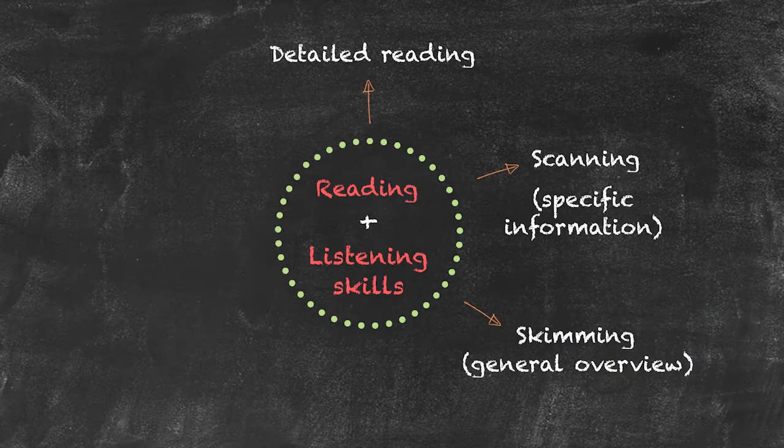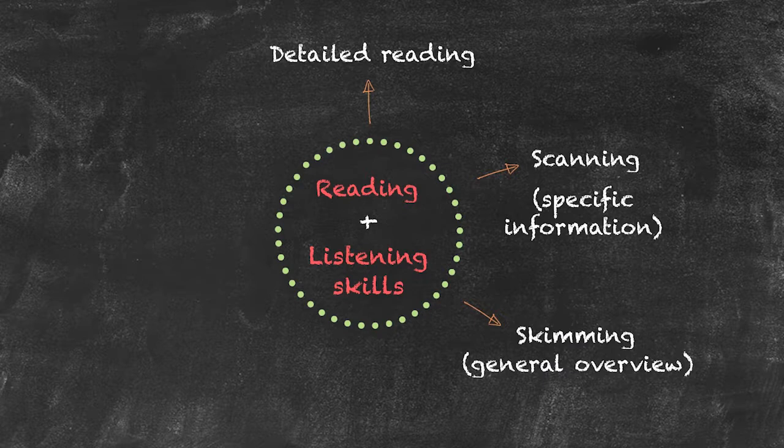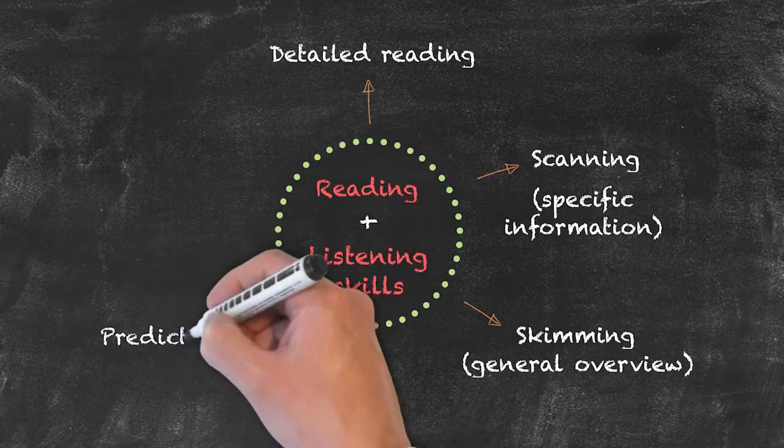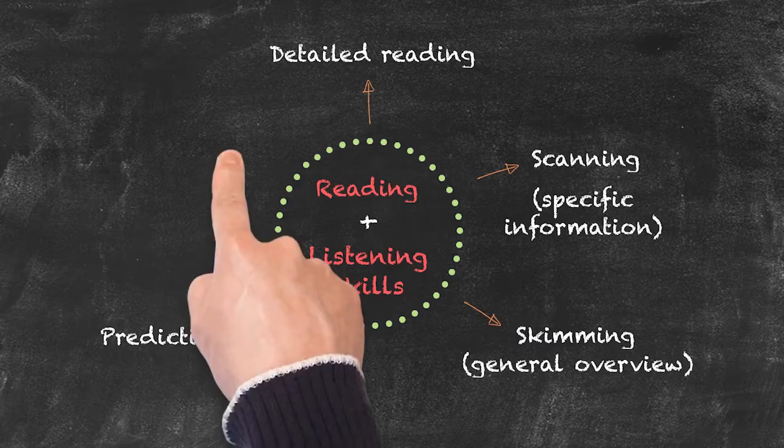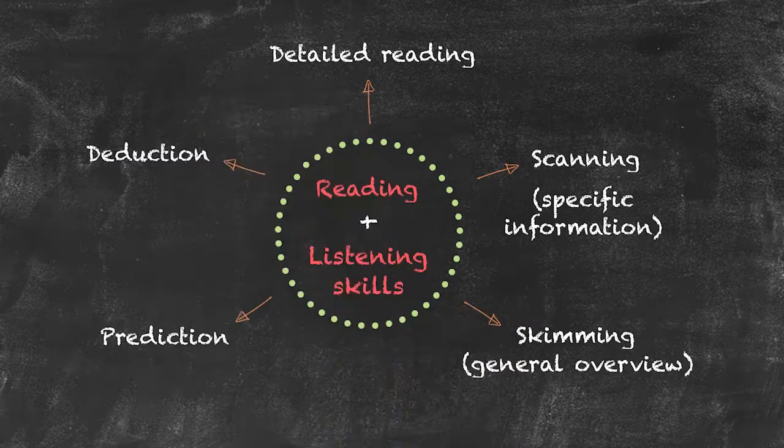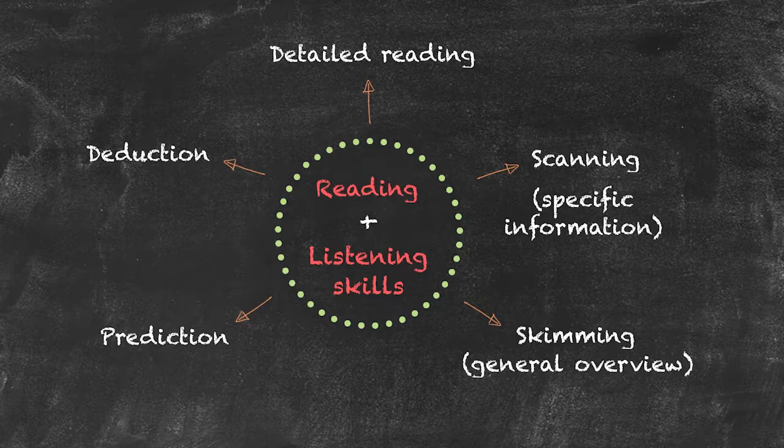Other types of reading skill that we can actually teach is reading for prediction. So having read a certain amount of various texts, we can then say what we think is going to happen next. The final one is deduction. So from the information that has been given, can we make some form of inference, for example, about who actually wrote that.